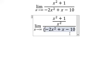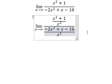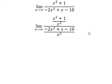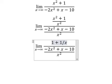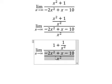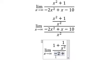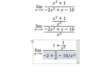Similar for this one. So if we simplify, we have 1 plus 1 over x square. Negative 2 plus 1 over x minus 10 over x square.